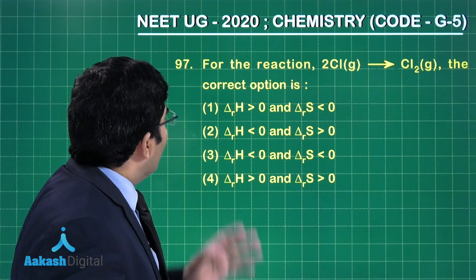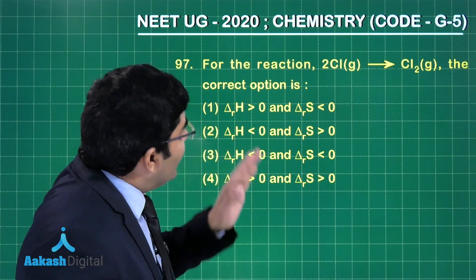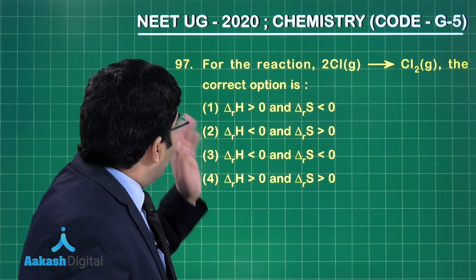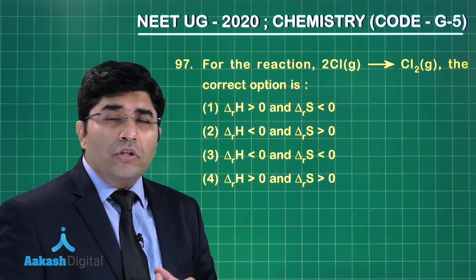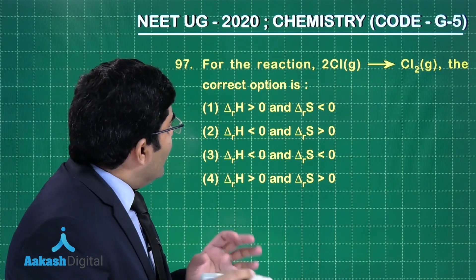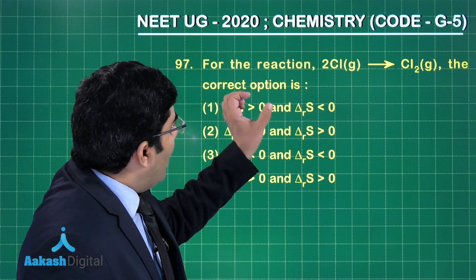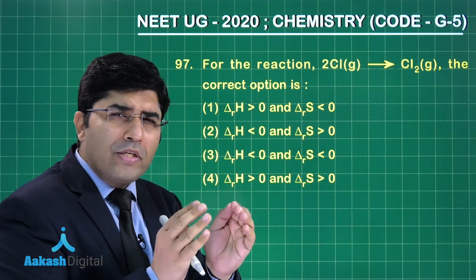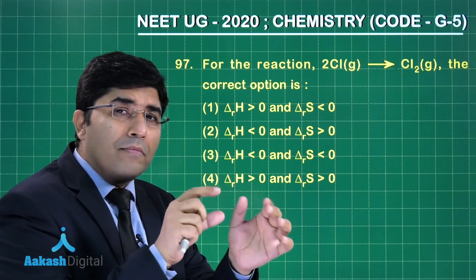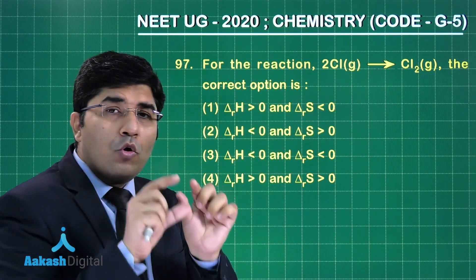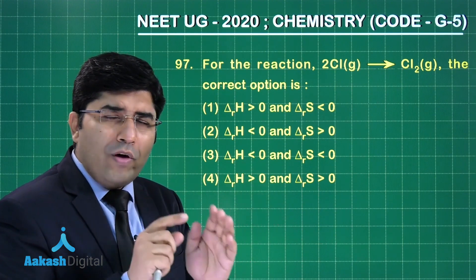So now in this question for the reaction 2Cl(g) giving Cl2(g), the correct option is asked. This question is from thermodynamics. You can see there are two atoms of chlorine, or I should say two moles of atoms of chlorine, and they are forming one mole of chlorine molecule.